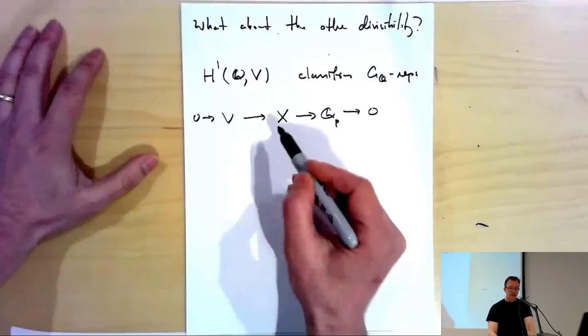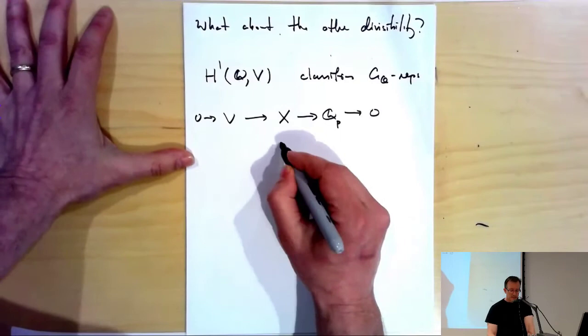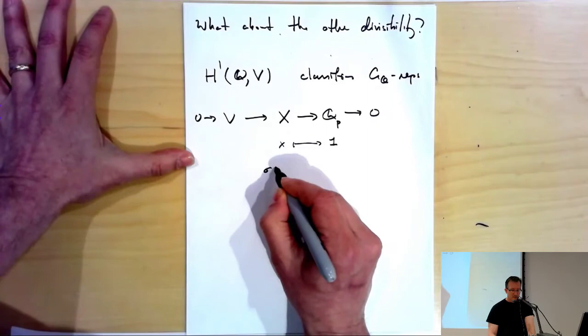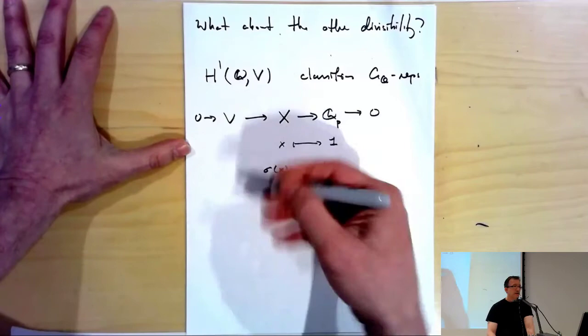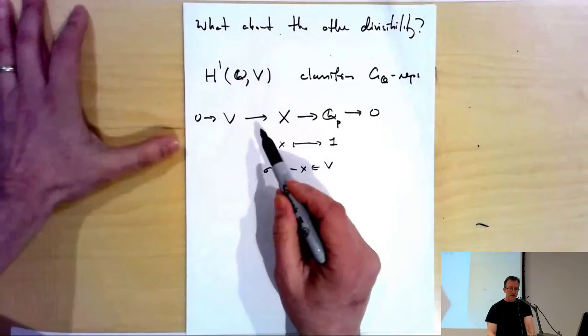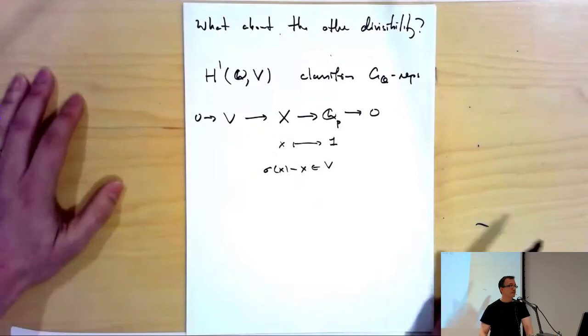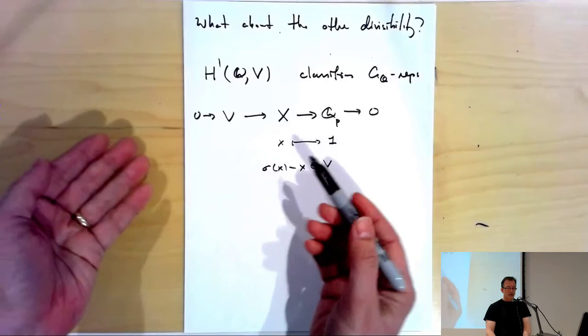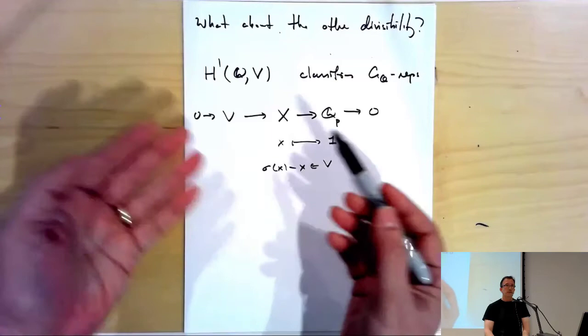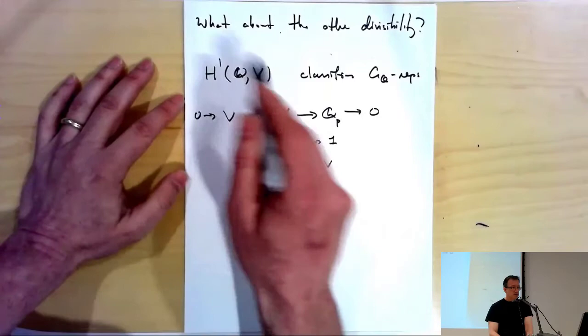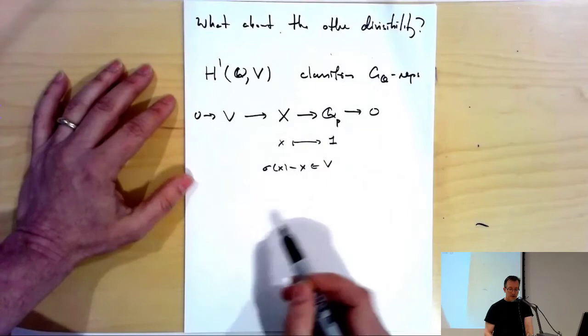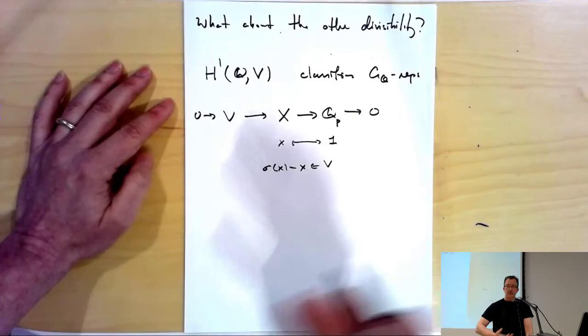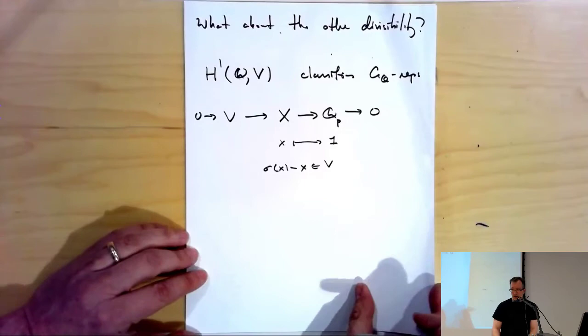Our Selmer groups are subgroups with some local conditions — for example, being trivial on the inertia group at a prime means that this extension is split when restricted to the local field. So we're looking for groups of extensions in the category of Galois modules satisfying certain local properties, meaning they split in certain ways. But we need to construct these things, and one of our best sources of Galois representations is automorphic forms.